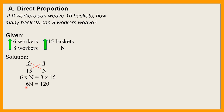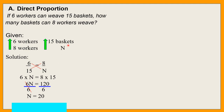Para mawala yung katabi ng N, which is 6, divide natin by 6. N na lang ang matira. And 120 divided by 6, that is 20. So ibig sabihin, kung 8 workers, 20 baskets na ang magagawa nila kasi mas maraming gumawa.